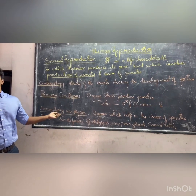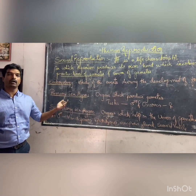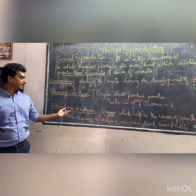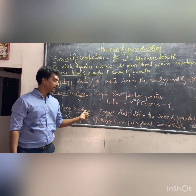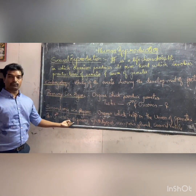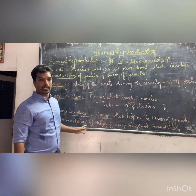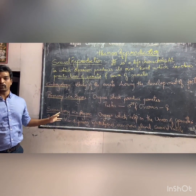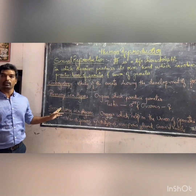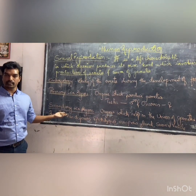Secondary sex organs are the organs which are involved in the union of gametes. In males, the secondary sex organs include vas deferens, epididymis, Cowper's gland, seminal vesicle, prostate gland, etc. These do not produce gametes but play an important role in the union of gametes.